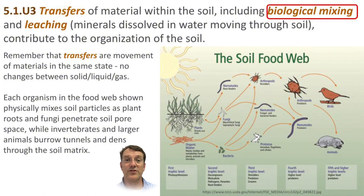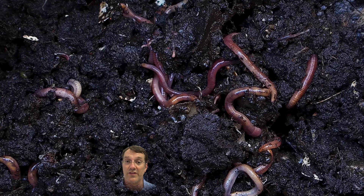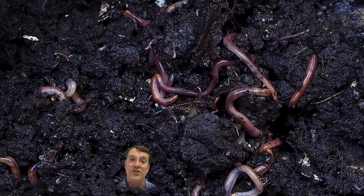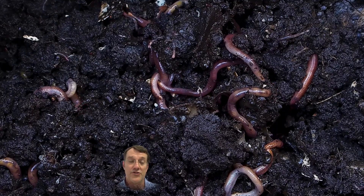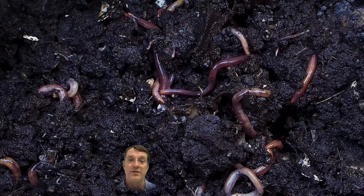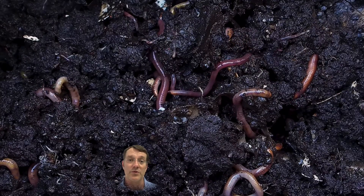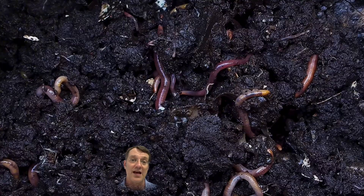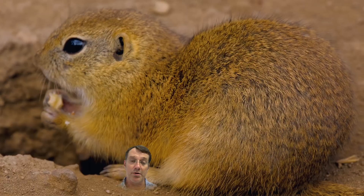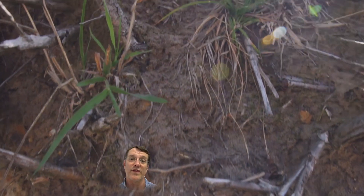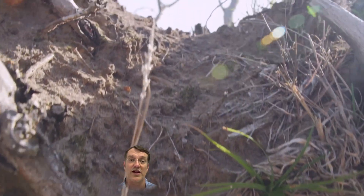There are two main transfers within soils. The first is called biological mixing, where organisms living in those top layers of soil literally churn and move around the materials in soil — things like earthworms or other invertebrates tunneling through, or moles and rodents burrowing through, moving things around without changing the state of matter. That's why it's a transfer.